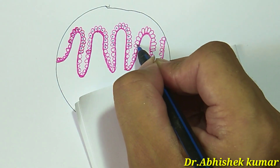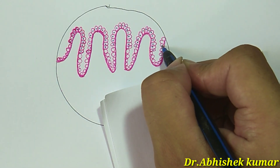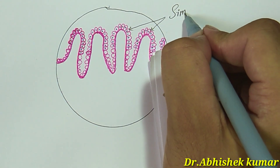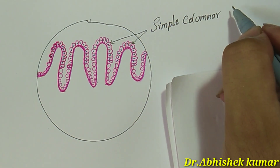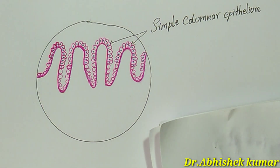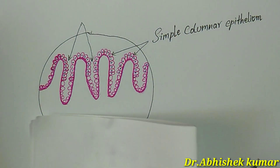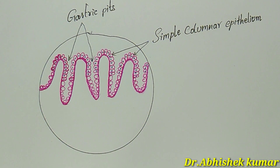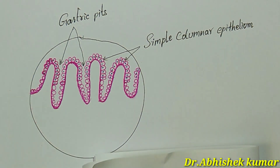The epithelium shows the invagination called gastric pit. This simple columnar epithelium is renewed about every 3 days. In every single square millimeter inside the stomach we are going to find 60 to 100 pits or glands.